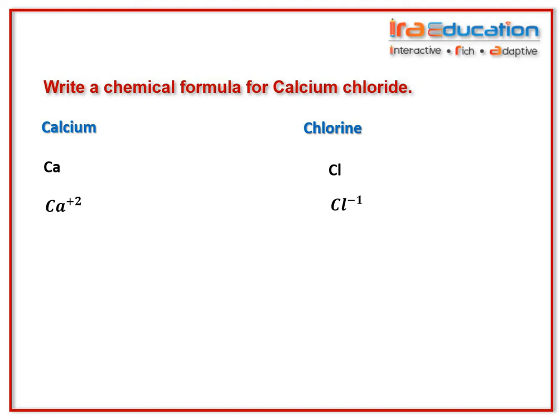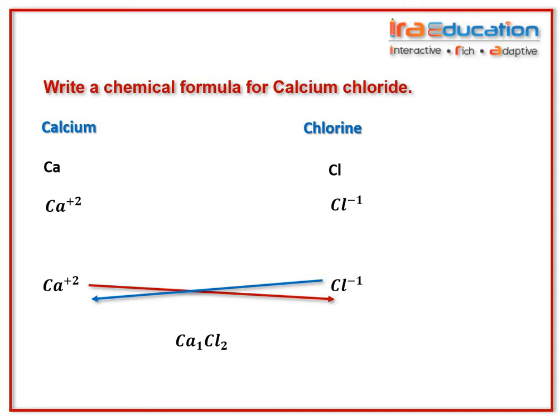Step 3: cross over the valencies, ignoring the signs (plus and minus) on the ions. After crossing over, the valencies are written at the lower right side of each ion as subscripts.